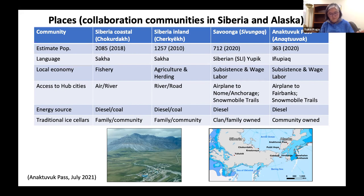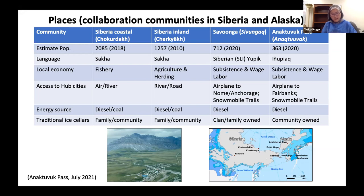The community size, exemplified population sizes, and geographic locations span two continents. Siberian collaborator communities are larger than Alaska communities in general. In Chukotka's coastal area, the local main economy is commercial fishing, and fishermen maintain ice cellars for storing fish for sale. Alaskan residents, compared to Siberia, work on wage labor while some people practice subsistence hunting and fishing.